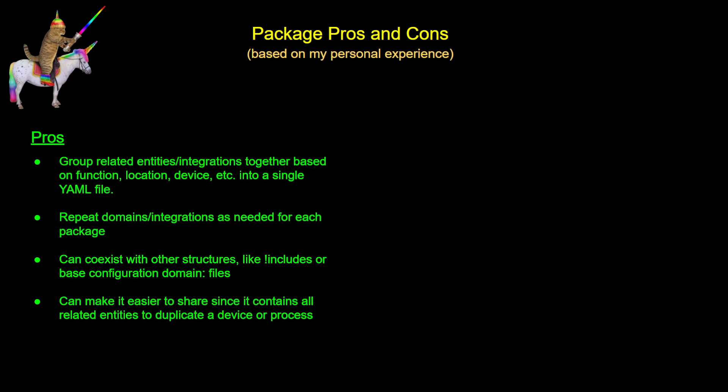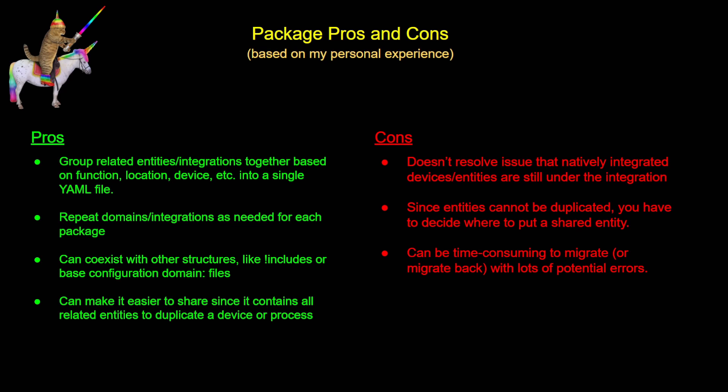Now let's take a look at a few of the cons. This doesn't resolve the issue that natively integrated devices still aren't going to be part of your package file. If you've got something that's a native Zigbee integration, ESPHome, or MQTT, you can't define an entity twice, so it's not going to be able to be part of your package. And since entities can't be duplicated, you might have some entity that is going to be shared across a couple of different packages. You also have to figure out exactly where you're going to put that shared entity. And it can be time-consuming to migrate with a lot of possibilities for errors because you're copying and pasting, adding spaces, and removing spaces.